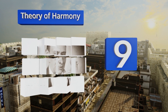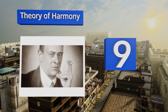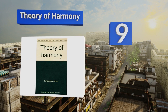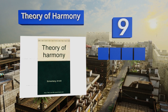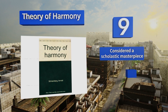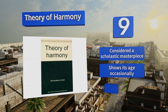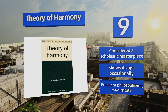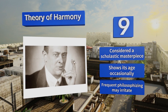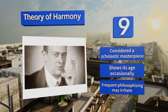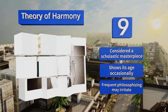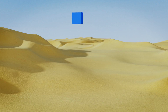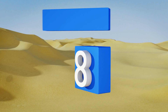At number nine, written over a century ago by one of the world's most legendary composers, Arnold Schoenberg's Theory of Harmony remains a seminal text to this day. It offers an integrated framework for not only understanding the how of the musical craft, but the why as well. It's considered a scholastic masterpiece, but it shows its age occasionally and the frequent philosophizing may irritate.